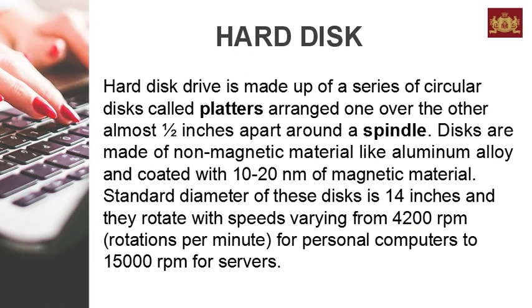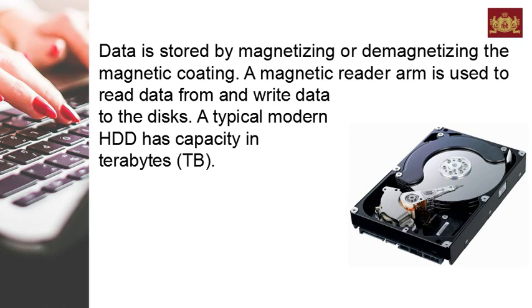A hard disk drive is made up of a series of circular disks called platters arranged around a spindle. Disks are made of non-magnetic material like aluminum alloy and coated with 10 to 20 nanometers of magnetic material. Standard diameter of these disks is 14 inches and they rotate at speeds varying from 4200 RPM for personal computers to 15000 RPM for servers. Data is stored by magnetizing or demagnetizing the magnetic coating, and a magnetic reader arm reads and writes data. A typical modern HDD has capacity in terabytes.